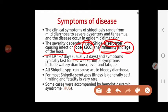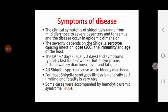The incubation period is one to seven days, usually three days, and symptoms last one to two weeks. Initial symptoms include watery diarrhea, fever, and fatigue. In more severe cases, watery diarrhea progresses to bloody diarrhea due to invasion of the intestinal mucosa. For most serotypes the disease is generally self-limiting and fatality is very rare.